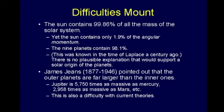James Jeans, about a century later, pointed out that the outer planets are far larger than the inner ones. That alone is bizarre — you would expect it to be the other way around. Jupiter is 5,750 times as massive as Mercury, and almost 3,000 times as massive as Mars, and so forth. This is also a difficulty even with current theories, which don't really face these things.